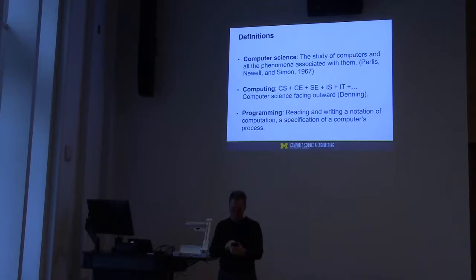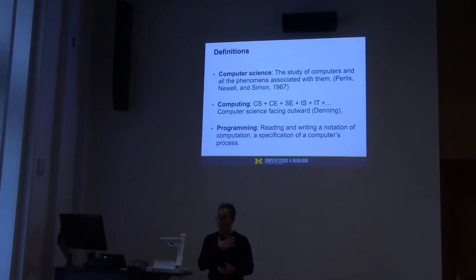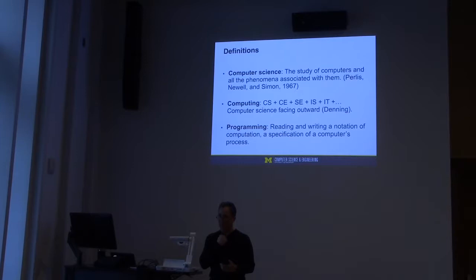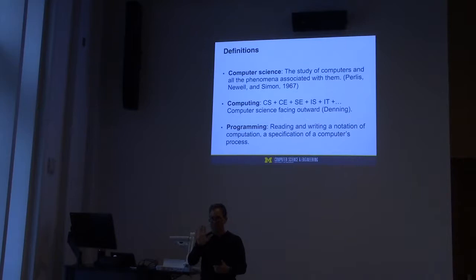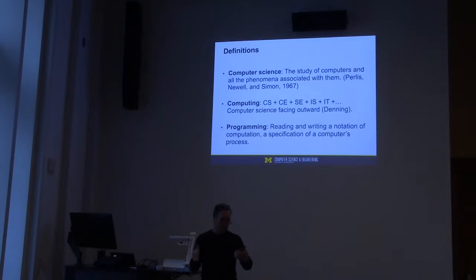My favorite definition of computer science is the one that Alan Perlis, Alan Newell, and Herb Simon developed in 1967 in a letter to Science Magazine: it's the study of computers and all the phenomena associated with them. Computing is meant to be an umbrella across software engineering, information systems, information technology, and a whole bunch of other things. Programming is reading and writing a notation for computation — a specification of a computer's process — which means the words 'while' and 'else' don't have to appear, it doesn't have to have curly braces.